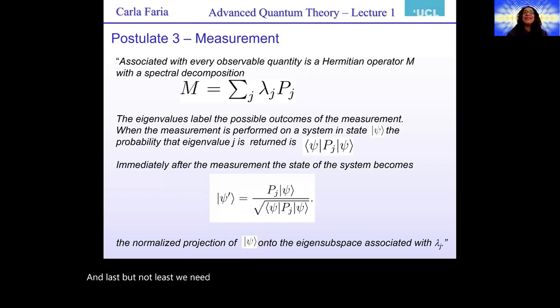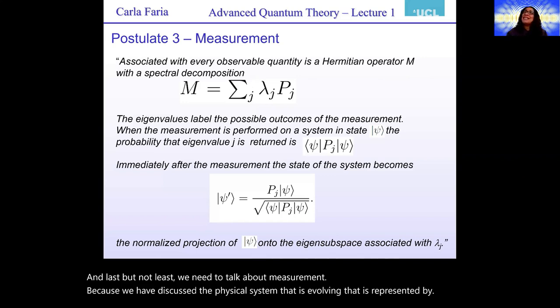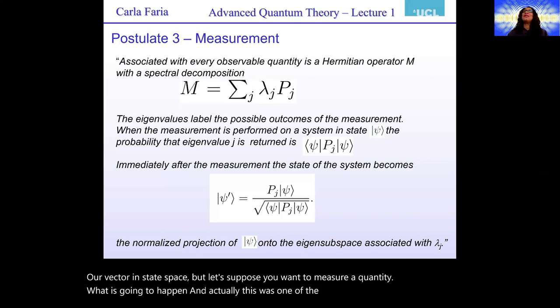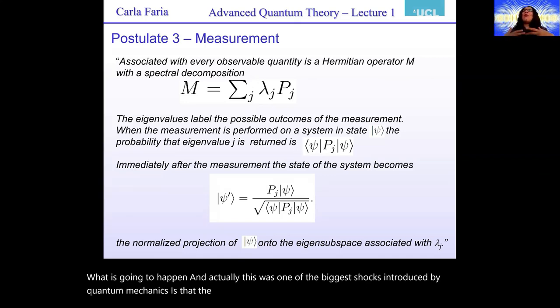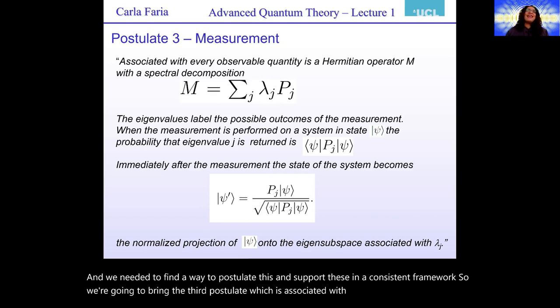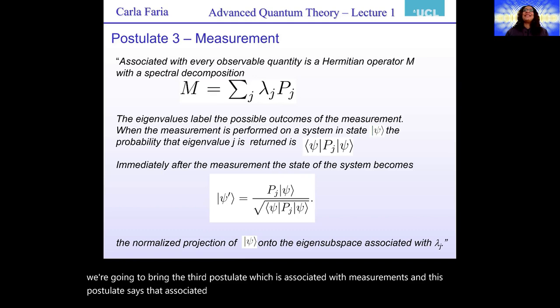And last, but not least, we need to talk about measurement. Because we have discussed the physical system that is evolving, that is represented by a vector in state space. But let's suppose we want to measure a quantity. What is going to happen? And actually, this was one of the biggest shocks introduced by quantum mechanics is that the measurement you make, depending on the question you ask, changes the system. And we needed to find a way to postulate this and to put this in a consistent framework. So we're going to bring the third postulate, which is associated with measurement.